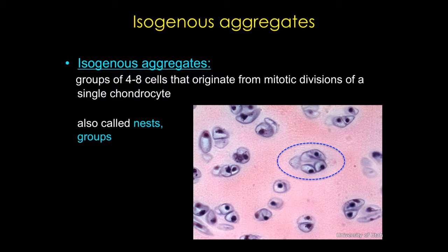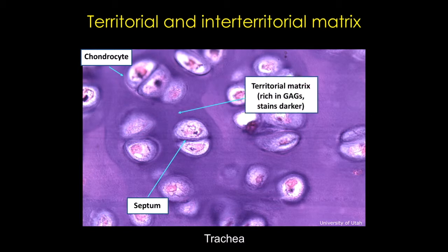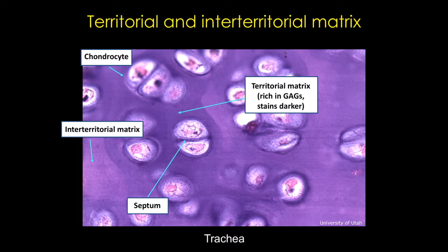This extracellular matrix contains fibers and ground substance, and each subtype of cartilage has a specific combination of these components. Here you can see chondrocytes in isogenous groups, often divided by a septum. The matrix immediately surrounding the chondrocytes is called the territorial matrix, and it differs in composition from the interterritorial matrix. As a result, these two matrices stain differently — the territorial matrix stains much darker than the interterritorial matrix.